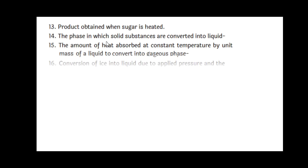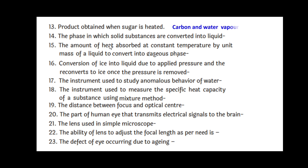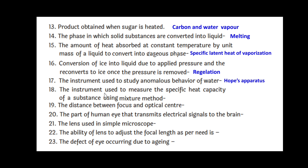The product obtained when sugar is heated is carbon and water vapor. The phase in which solid substances are converted into liquid is melting. The amount of heat absorbed at constant temperature by unit mass of a liquid to convert it into the gaseous phase is the specific latent heat of vaporization. Conversion of ice into liquid due to applied pressure and reversion to ice once the pressure is removed is regelation. The instrument used to study anomalous expansion of water is the Hopes apparatus. The instrument used to measure the specific heat capacity of a substance using the mixture method is a calorimeter.